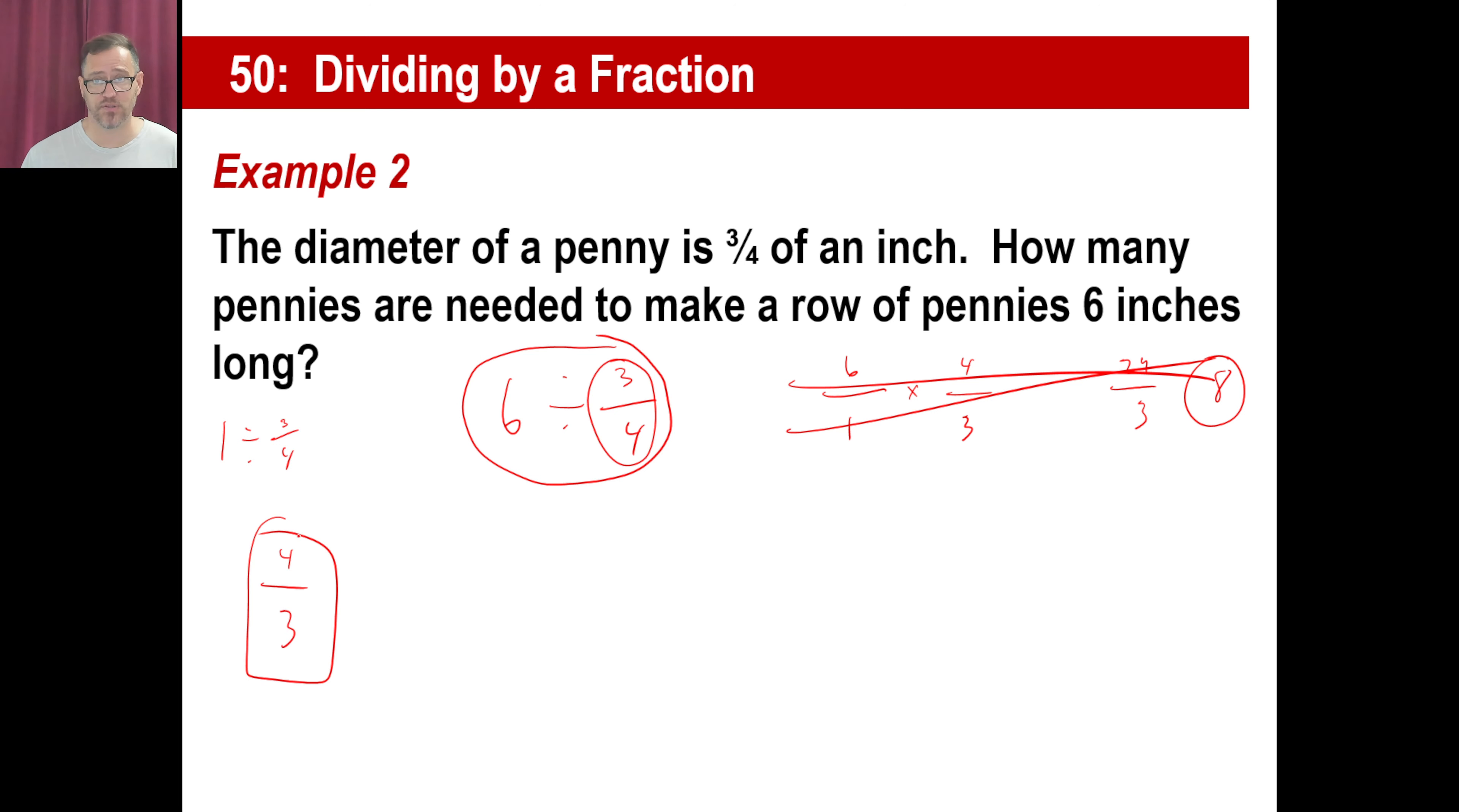But we don't just have 1 inch. We have a row of pennies 6 inches long. So we go, okay, we figured out that's the amount of pennies in 1 inch. We want 6 inches, we're just going to multiply that by 6. You can do it as a fraction the same way we did here. Now you notice this is exactly the same problem. 4 times 6 is 24 divided by 3, 8. Boom. There you go. That's all there is to that.